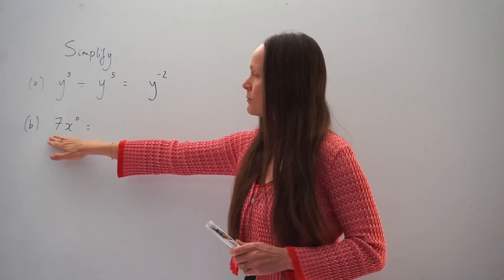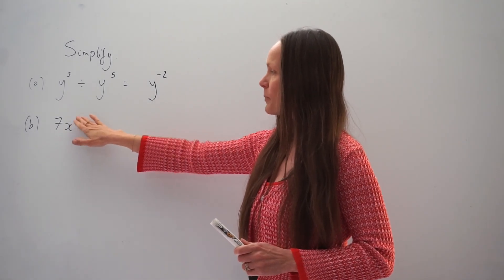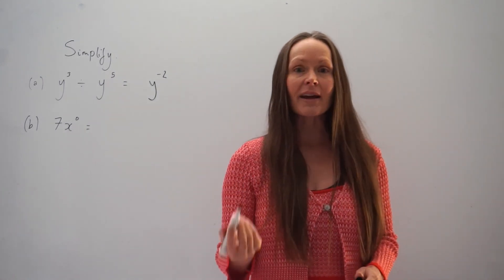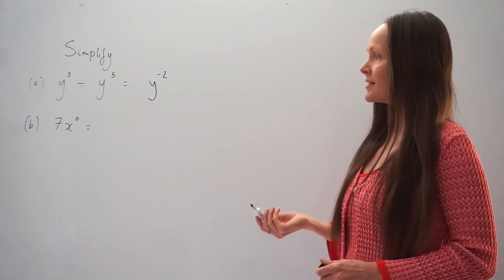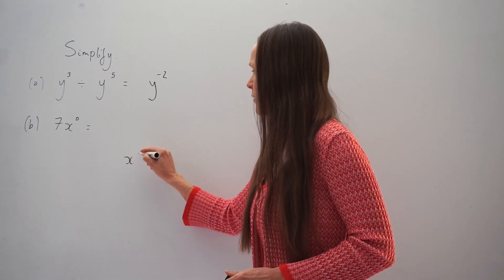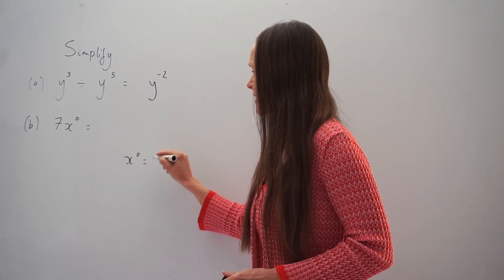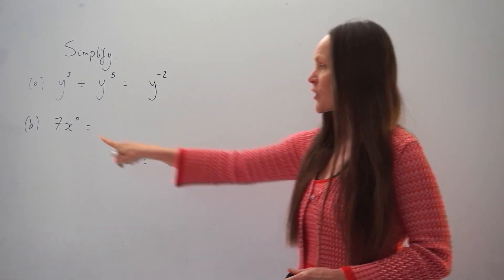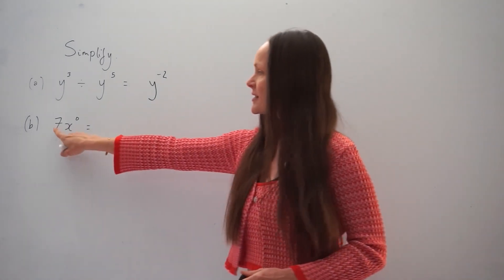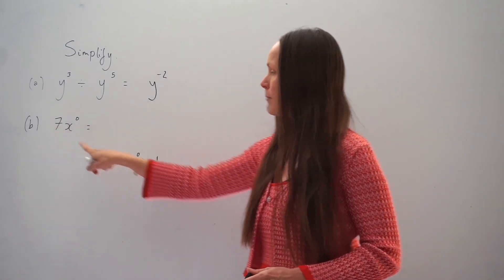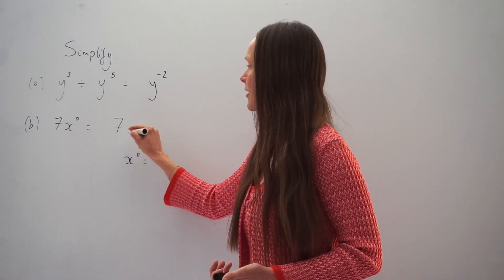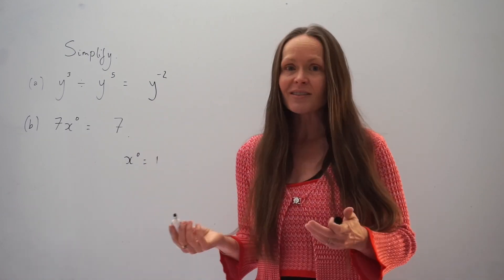In part B it says 7 multiplied by x to the power of 0. Remember, anything raised to the power of 0 is always equal to 1. So x to the power of 0 equals 1, and because we're multiplying these together, 7 multiplied by 1 is just 7. So when you simplify, the answer is just 7.